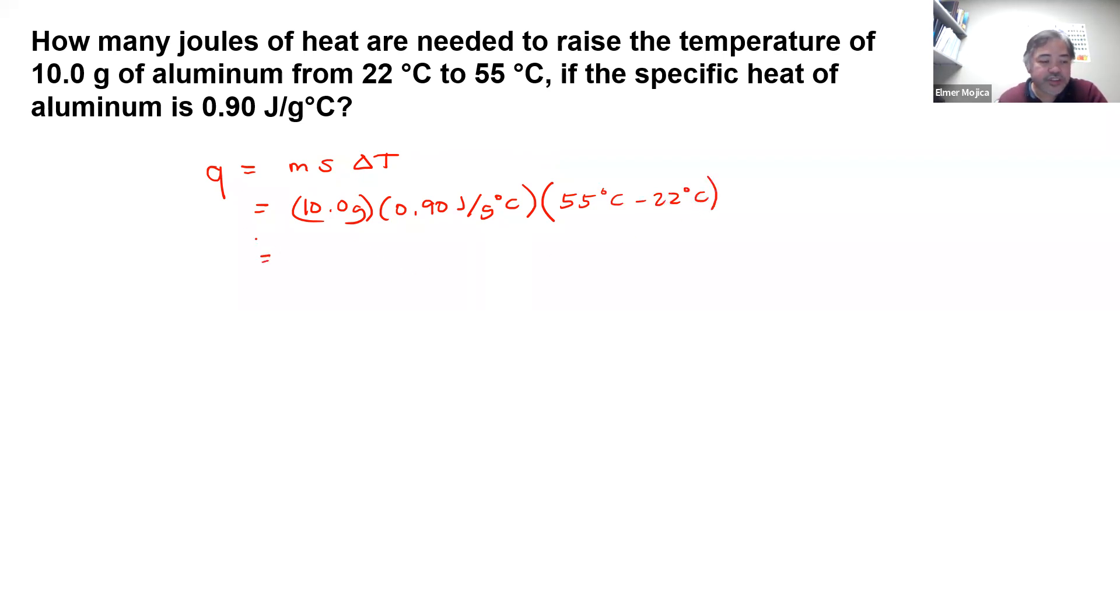If you're going to calculate all of them, you have 10 grams times 0.9, that will give you 9, times 55 minus 22, that will give you around 33. So it's just 9 times 33, and you will get around 297 joules of heat.